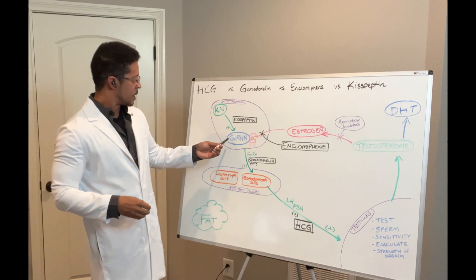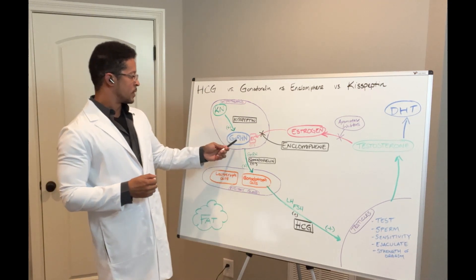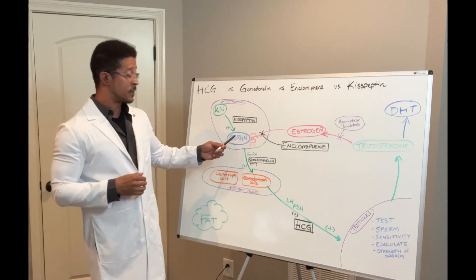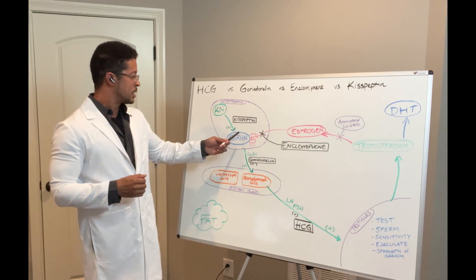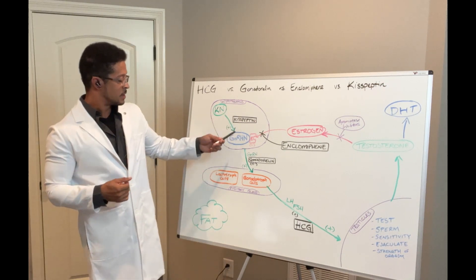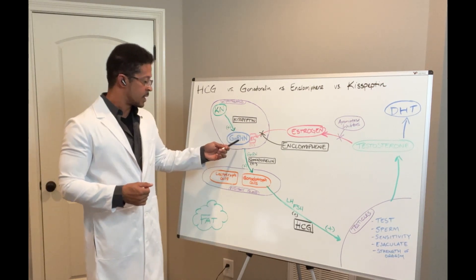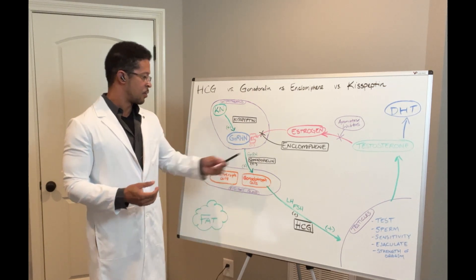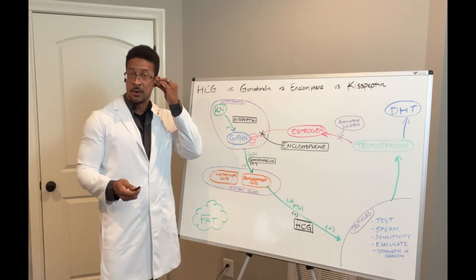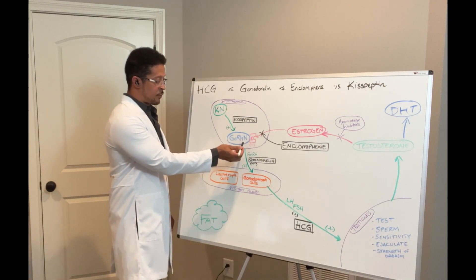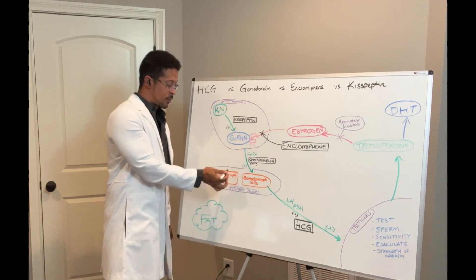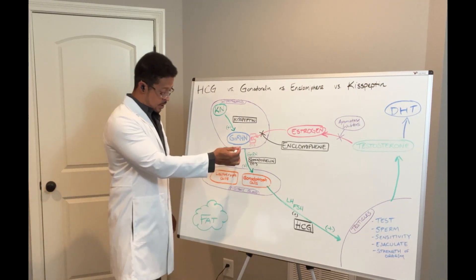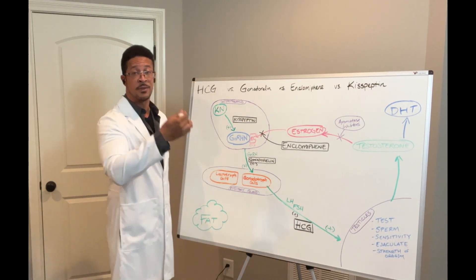The kisspeptin neuron produces kisspeptin and that stimulates the next part of the cascade, the gonadotropin-releasing hormone neuron. So in this location, we're still inside the hypothalamus. In this location here, it gets stimulated, it gets turned on by kisspeptin. And this neuron here produces gonadotropin-releasing hormone, GNRH.